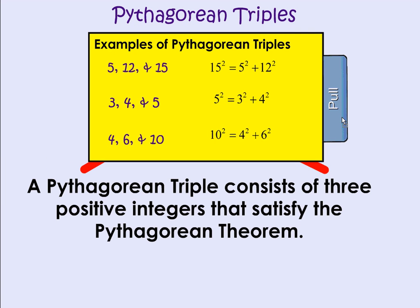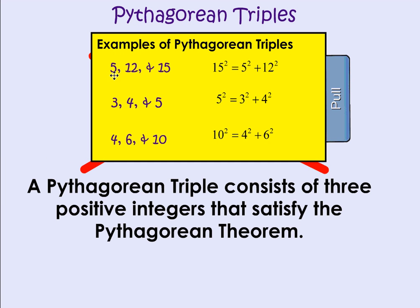Here we have some examples of some Pythagorean Triples. 5, 12, and 15 because 15 squared is equal to 5 squared plus 12 squared. 3, 4, and 5 because 5 squared is equal to 3 squared plus 4 squared. 4, 6, and 10 because 10 squared is equal to 4 squared plus 6 squared.